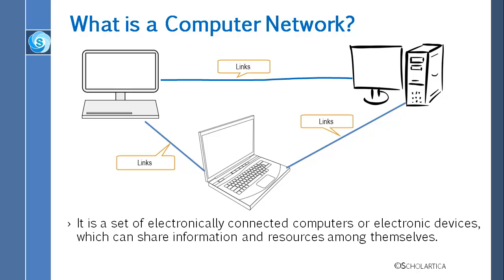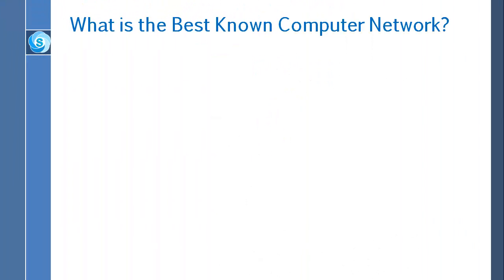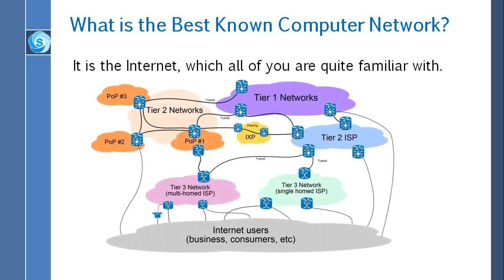The connections or network links between nodes are established using either cable media like twisted pair, coaxial cable, or fiber-optic cable, or it can be wireless media too. Do you know the best known computer network today? It is the internet, which all of you are quite familiar with.